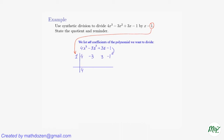Then we take this 4 and multiply it by that number 1, so we have 4 times 1 here. So we have 4 times 1, well, that's the same as 4.